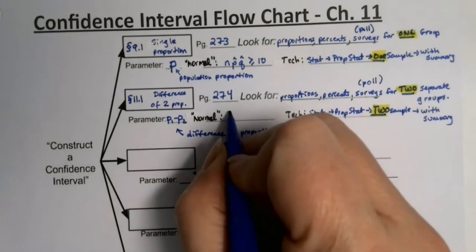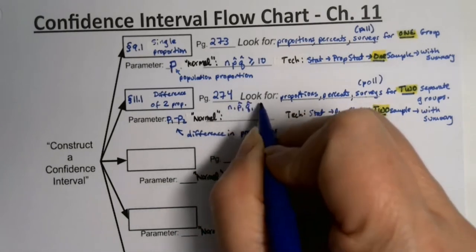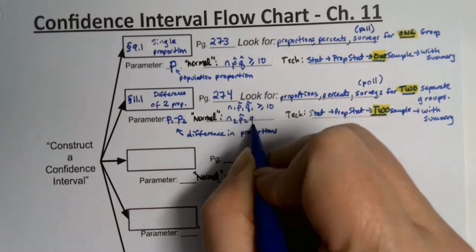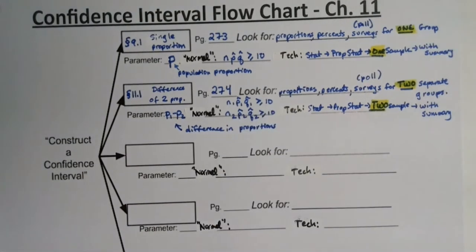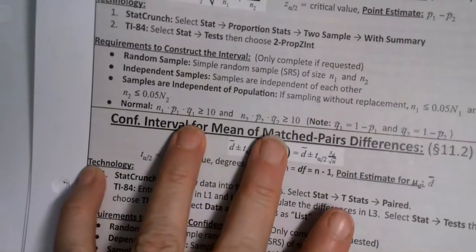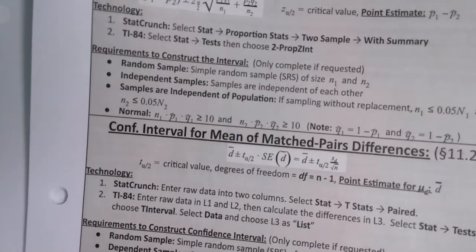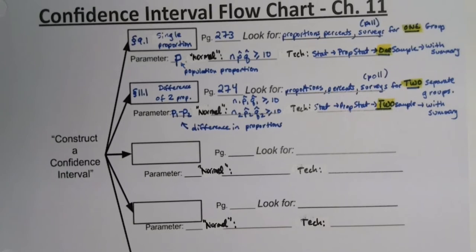For the normality condition with the single proportion, you need n × p̂ × q̂ ≥ 10. For the difference of two proportions, you need to check it twice: n₁ × p̂₁ × q̂₁ ≥ 10 and n₂ × p̂₂ × q̂₂ ≥ 10. Both conditions are listed on the sheet — page 273 for section 9.1 and page 274 for section 11.1.